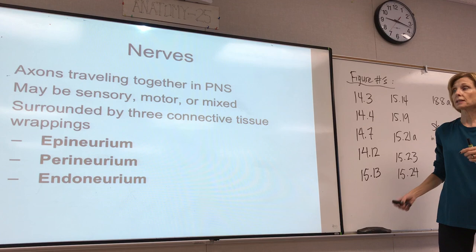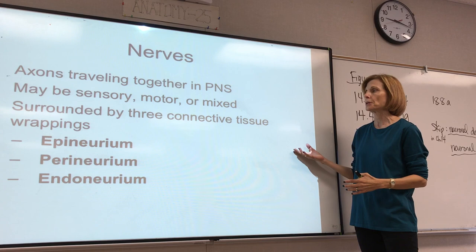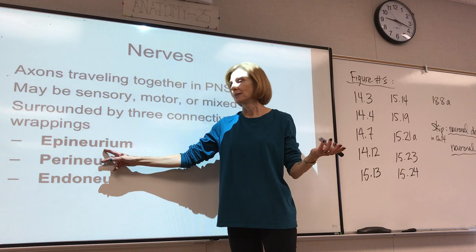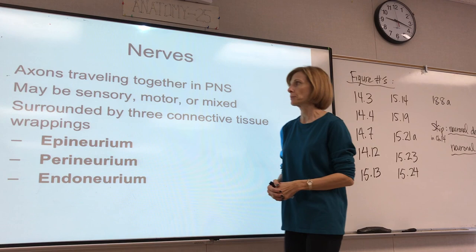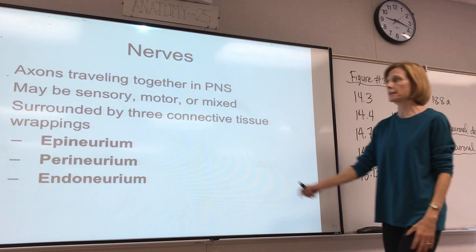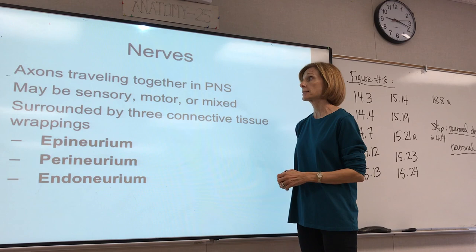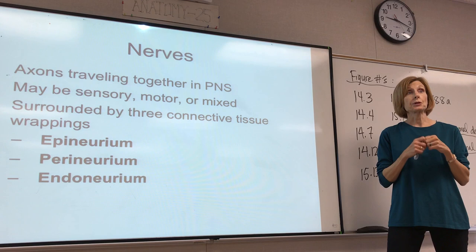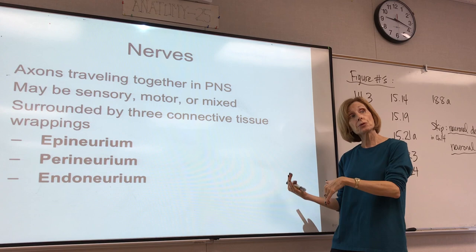One more thing in Chapter 14 is the structure of a nerve. This is actually very simple — kind of similar to the layers of connective tissue we see in muscle, except those were called epimysium, perimysium, endomysium. A nerve is a bundle of axons traveling together in the peripheral nervous system. It's a grouping of axons held together with layers of connective tissue.